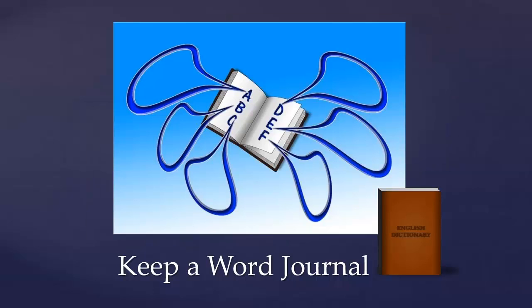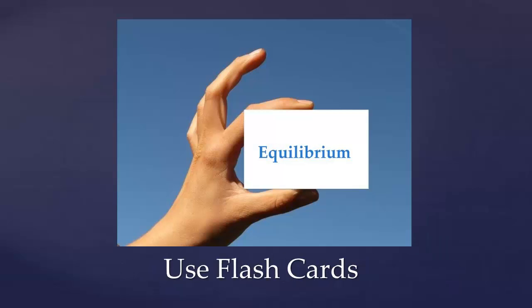You can organize your word journal any way you want. Some students have a page for each letter of the alphabet. Some students write down the words as they go. It doesn't matter how you structure a word journal, just that you keep it — and not just keep it, but review it. You will never be able to remember a word unless you see it more than once. If you don't like the idea of a word journal, maybe consider keeping flashcards with academic terms on them. The key is reviewing them regularly, as this will help to reinforce what you have learned.